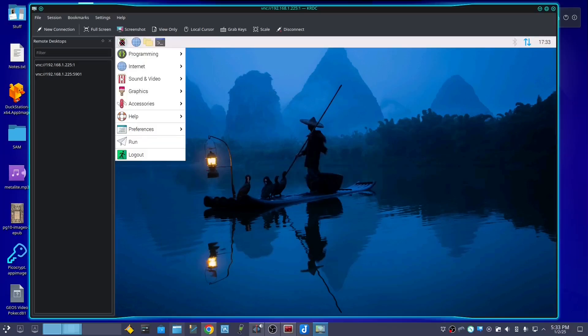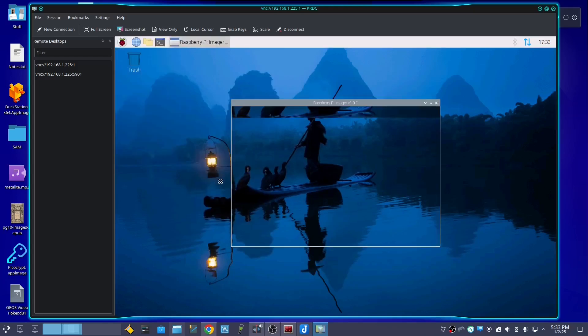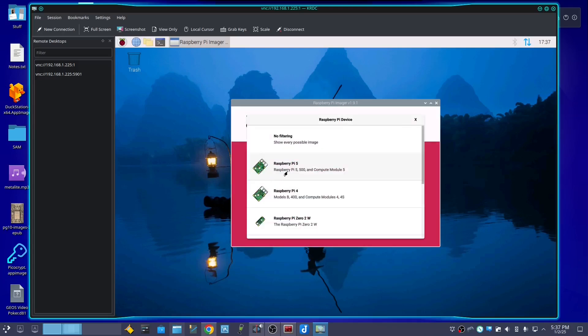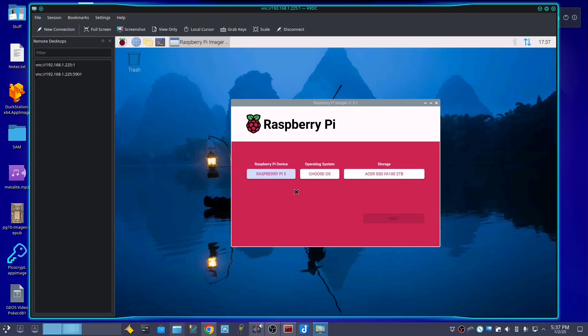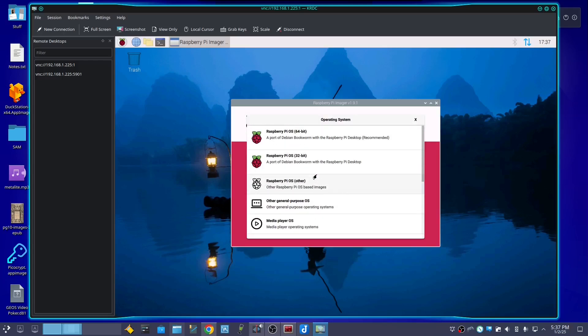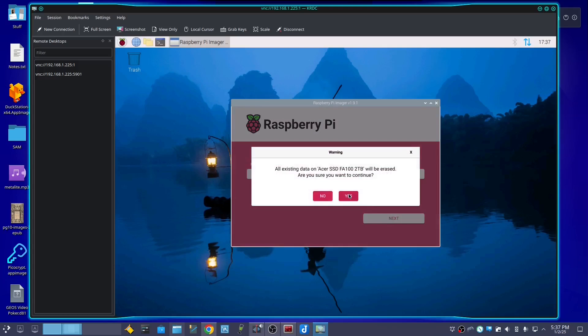Okay, next, after you boot up, go to Accessories, Raspberry Pi Imager. And we're going to install Raspberry Pi OS on the NVMe by choosing device, Raspberry Pi 5, Operating System, Raspberry Pi OS 64-bit, and storage, select your NVMe. Then click yes.